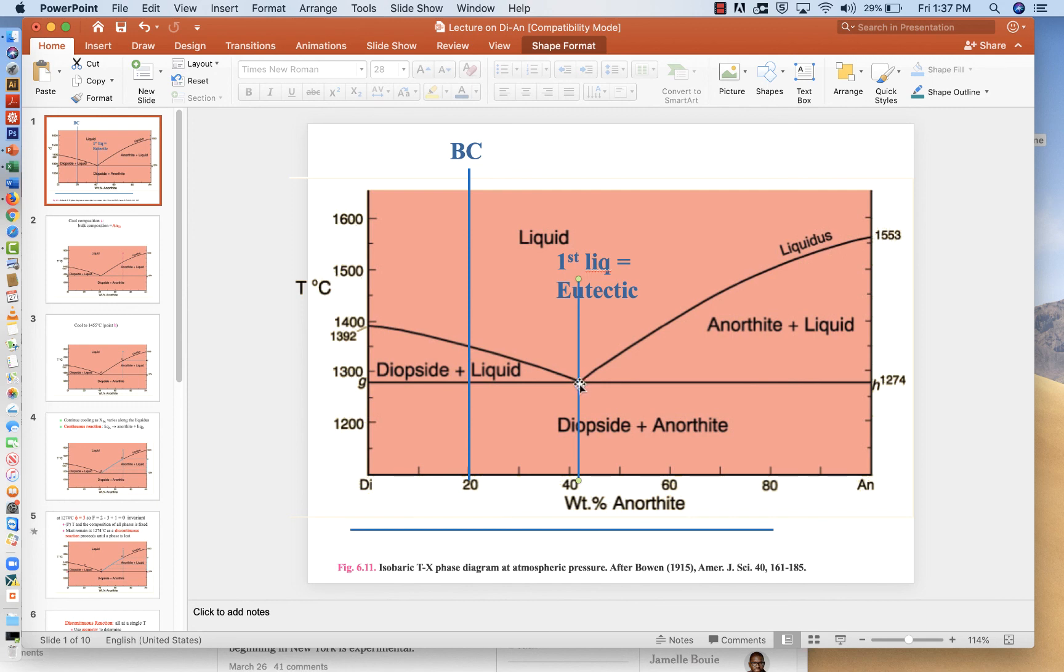All the anorthite will disappear at 1274, just as it began. We've added a lot of heat in the meantime. Any further heating once anorthite is gone will allow the liquid to heat up and for the liquid to migrate up to the liquidus until it reaches this point. And then that means that the system is completely molten, and that would happen at a temperature of about 1350, about 1350 degrees.